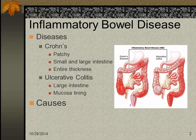Inflammatory bowel disease is more common in developed countries and urban areas. There's a theory that developed countries get in more trouble because they don't have parasites like third-world countries have. It is one of the five most prevalent GI diseases in the United States as far as cost.